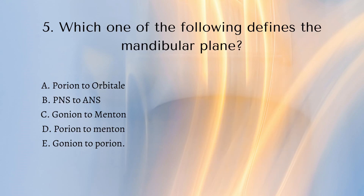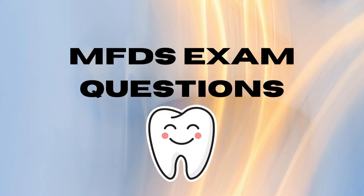Now on to our last question: which one of the following defines the mandibular plane? This is an ortho question. Is it porion to orbitale, posterior nasal spine to anterior nasal spine, gonion to menton, porion to menton, or gonion to porion? Thanks for watching the video — if you'd like more videos with exam questions, please let me know in the comments. Like and subscribe and I'll try to make some more. Thanks for watching.